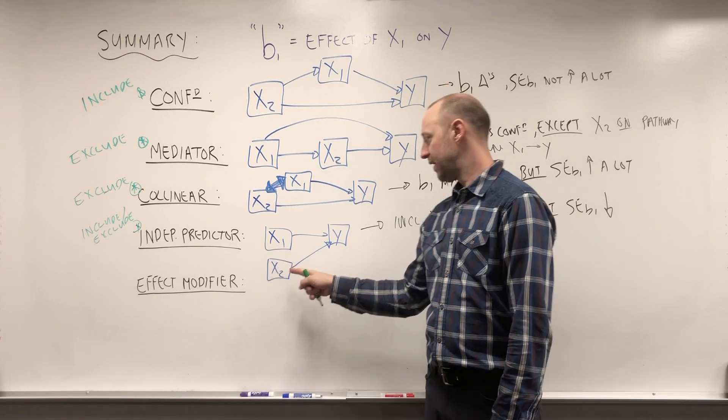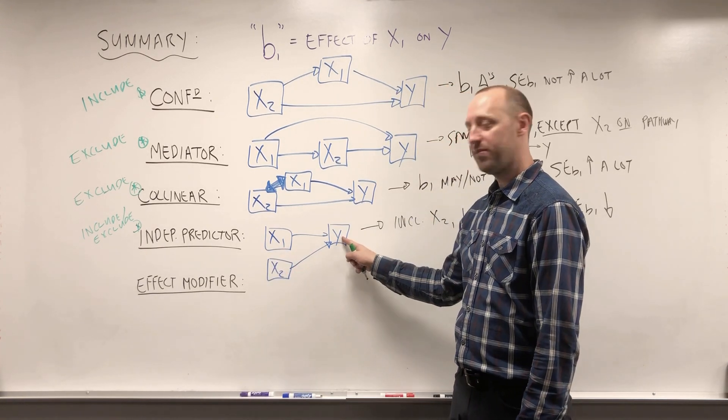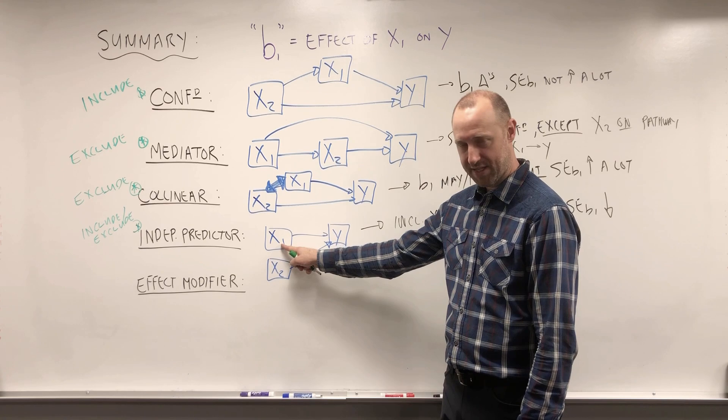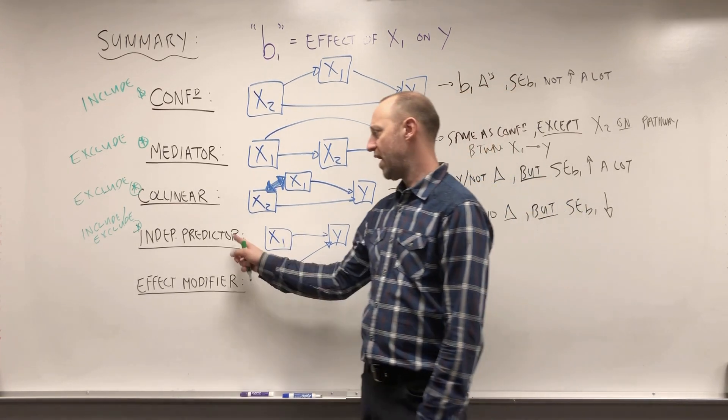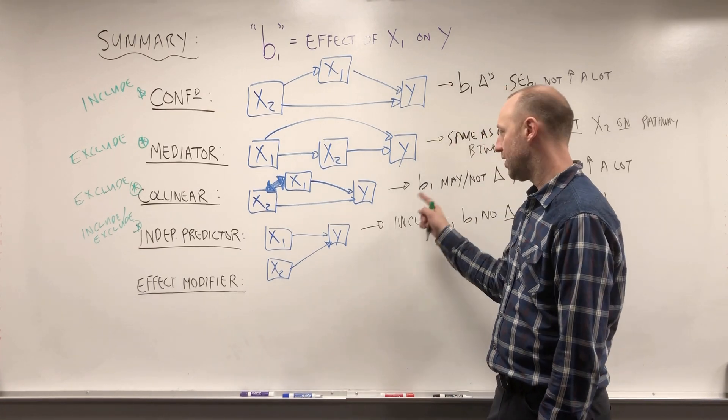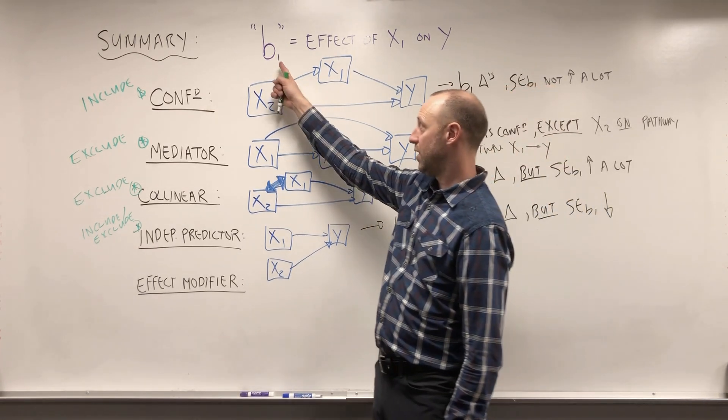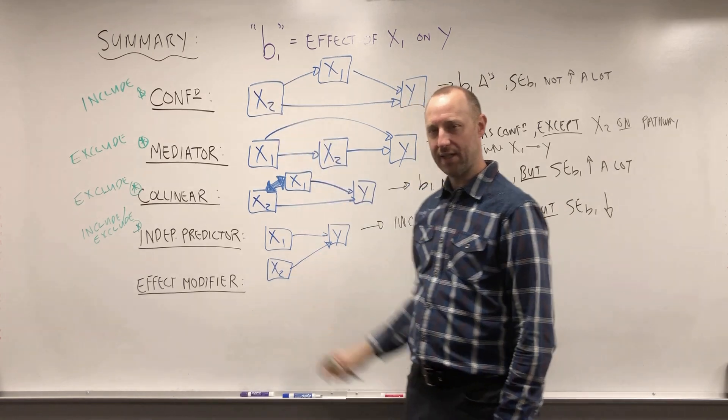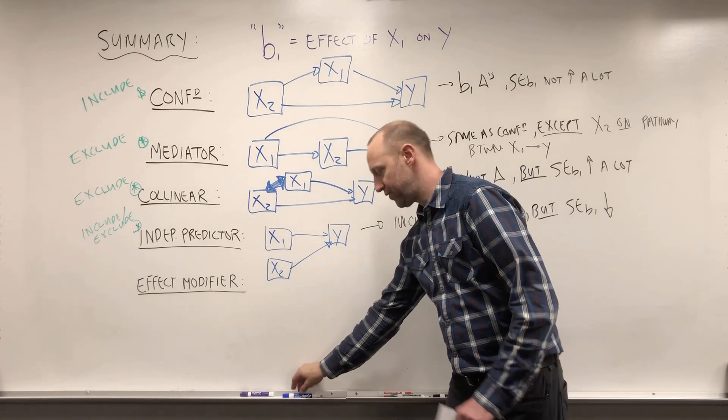The reason for including them is it gives us a better estimate of the outcome, it gives us a more precise estimate of B1. Arguments for excluding them is if they're not confounders, they don't need to be adjusted for, they're not distorting B1. They're not confounding that effect, they're not biasing it in any way, so we don't necessarily need to adjust for those.